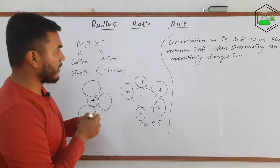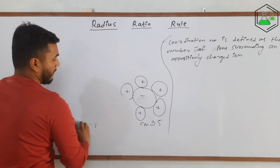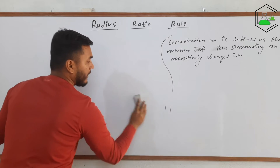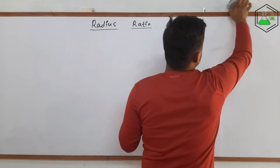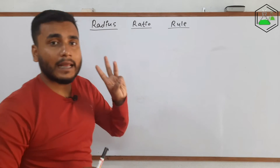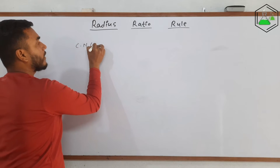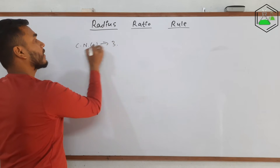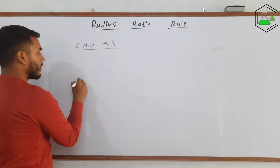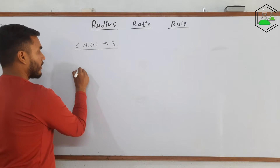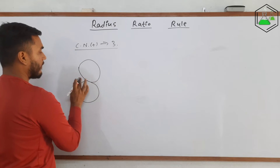Now let us understand the radius ratio concept. For that, we need to study the stability of different cations. Let us take an example in which the coordination number of the cation is 3. We are taking an example where the coordination number of the cation — represented by plus — is 3. So there are 3 different possibilities. Let me draw the figure of each of them so it will be easier to understand.